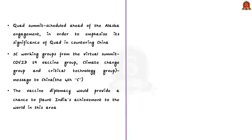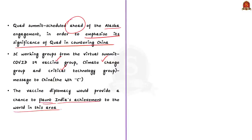The third takeaway of the US-China engagement is that the Quad summit was scheduled ahead of the Alaska engagement to emphasize the significance of Quad in countering China. The three working groups founded as an outcome of the Quad virtual summit — referred to as the three-C working group, covering COVID-19 vaccines, climate change, and critical technology — were used to send a message to China, which the author calls the fourth C. India's vaccine diplomacy would also provide a chance to showcase its achievements. Thus, Quad has a definitive role to play in the region.